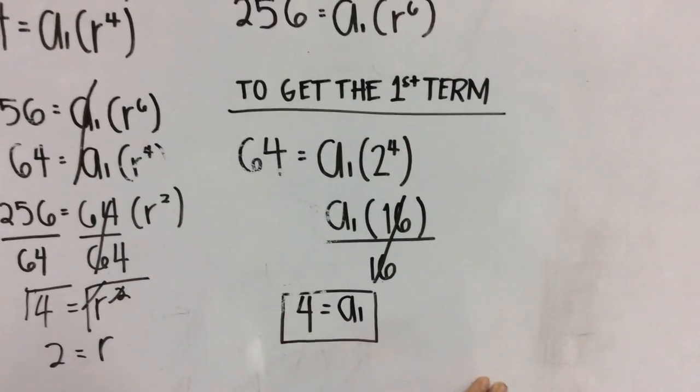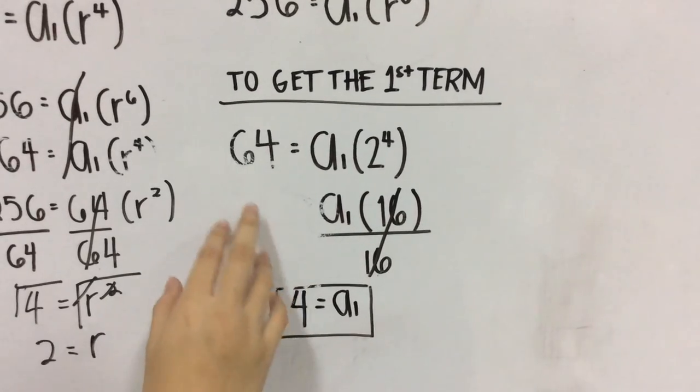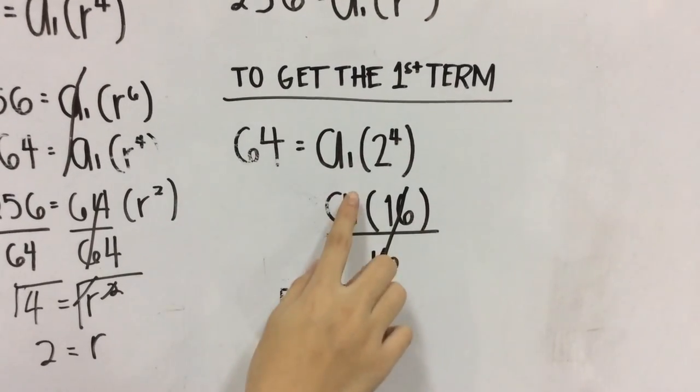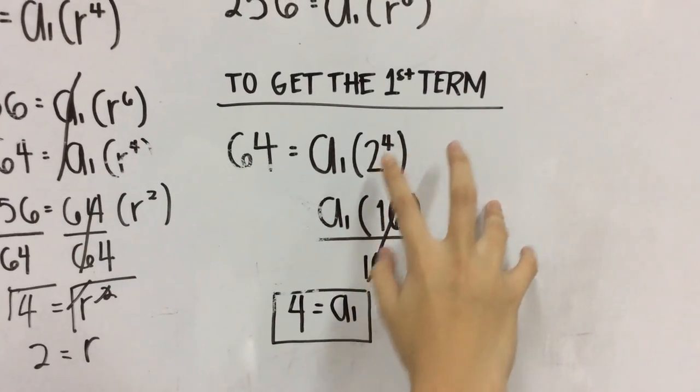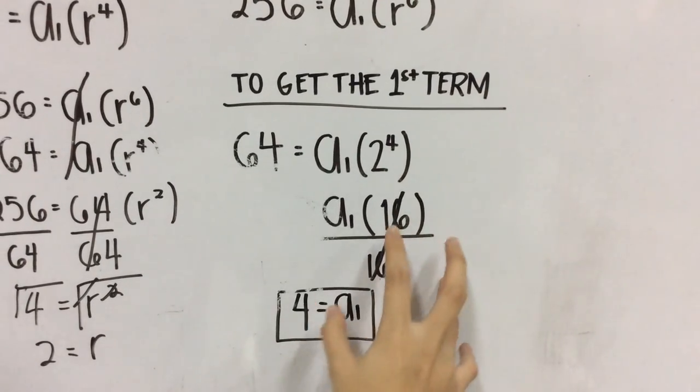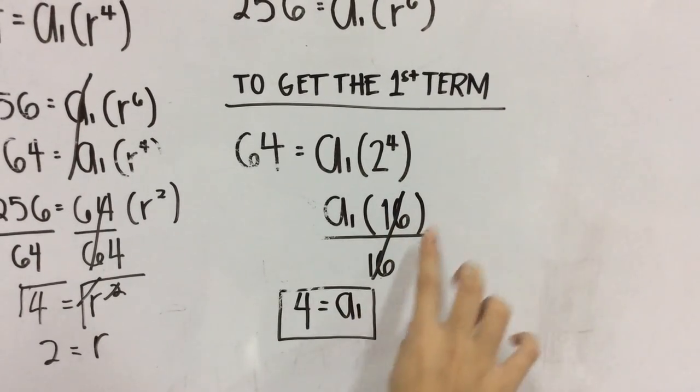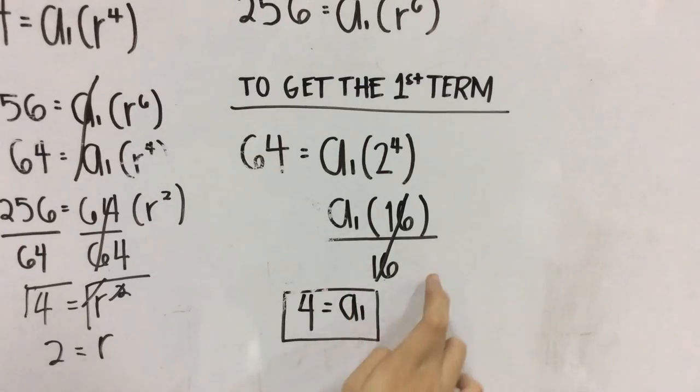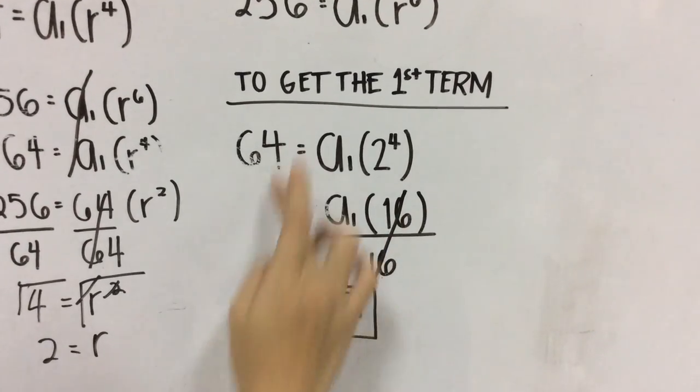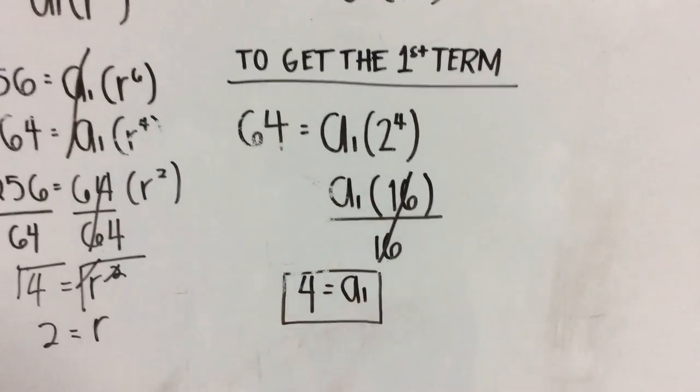So, to get the first term, we're going to plug in everything that we have solved for, which is 64 equals A of 1 quantity 2 raised to 4. And we will get 16. And we will divide 16 to both sides. Here, we will cancel and we will get 4. So, A of 1 equals 4.